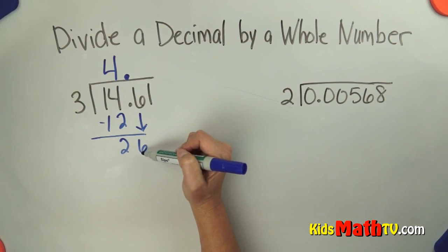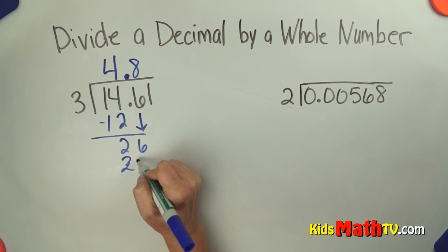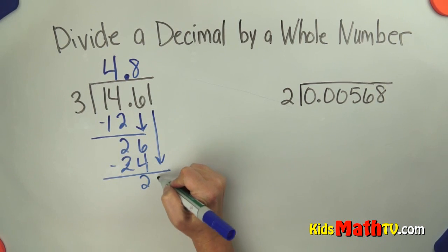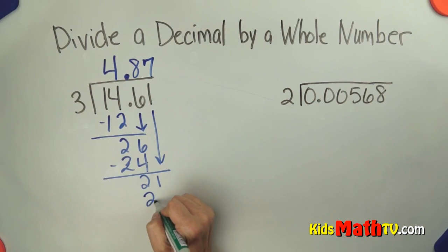8 times 3 is 24, subtract and I get 2. Bring down a 1. How many threes in 21? 7. 7 times 3 is 21, subtract.